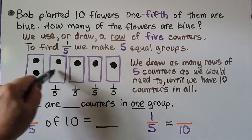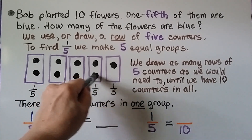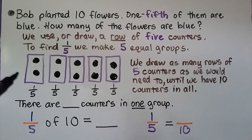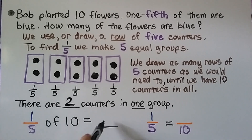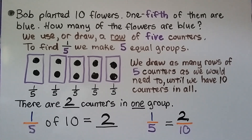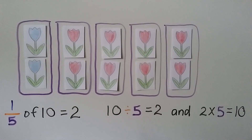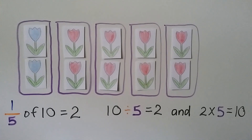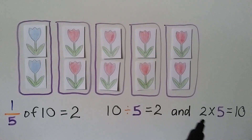So we have five, six, seven, eight, nine, ten. There are two counters in one group, so one fifth of ten is equal to two. We can also say there are two out of ten in all, so there's two tenths. And one fifth is equal to two tenths — they're equivalent fractions. If Bob planted ten flowers and one fifth of them were blue, we see two were blue. One fifth of ten is equal to two, and ten divided by five groups is equal to two in each group. We can check it: two times five is equal to ten.